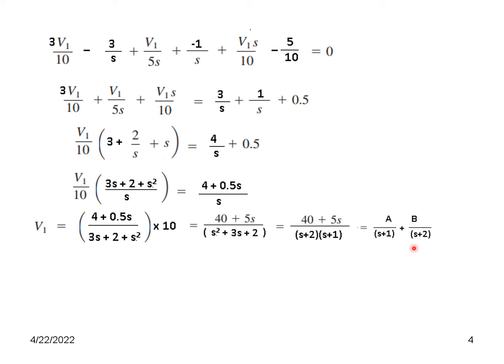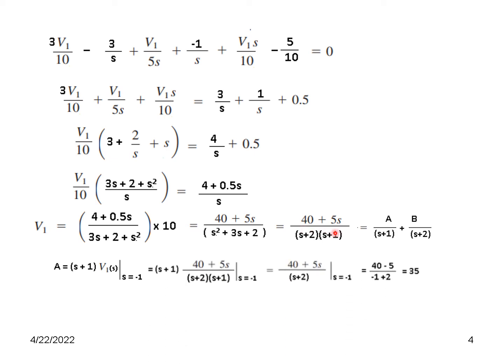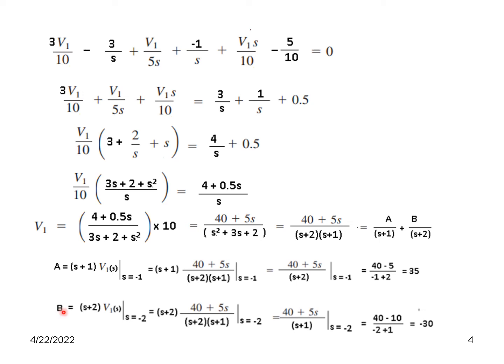We use the partial fraction technique to solve. The denominator has factors S plus 1 and S plus 2. Setting S plus 1 equal to zero gives S equals minus 1. Substituting this value yields one partial fraction coefficient of 35. Using the same technique for B gives B equals minus 30.